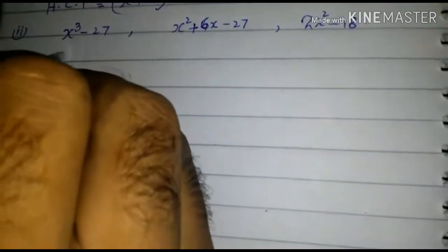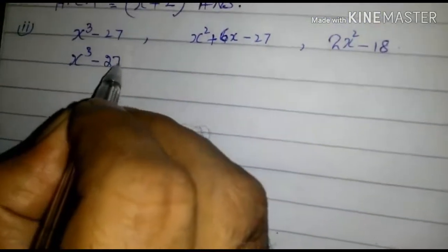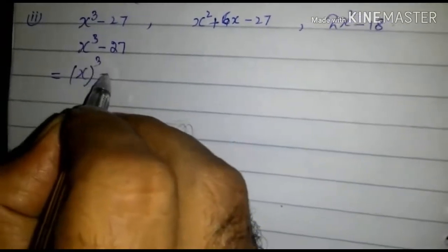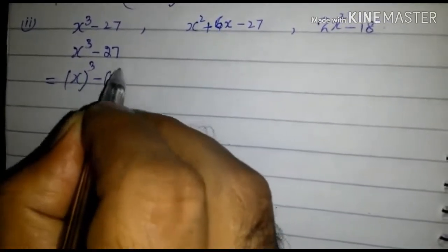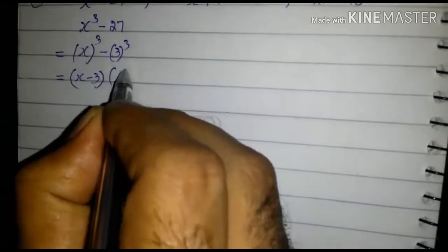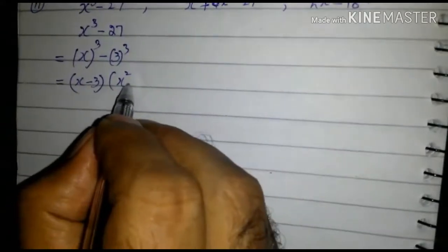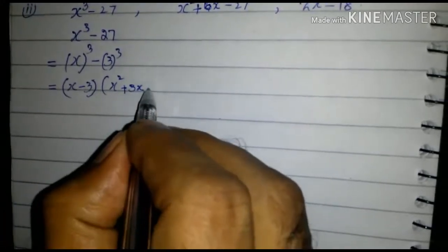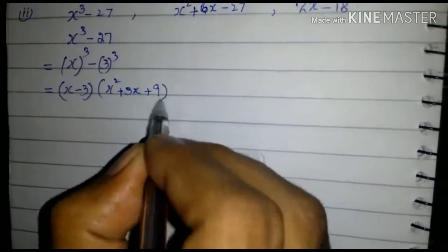Let's solve this. First of all, consider this x cube minus 27. We can write it as x cube minus 3 cube.